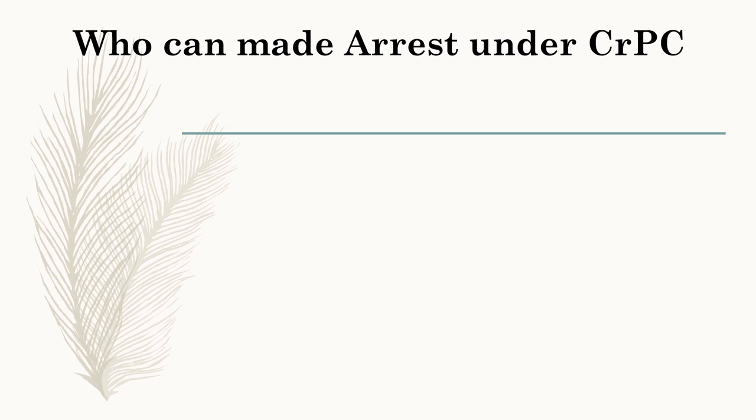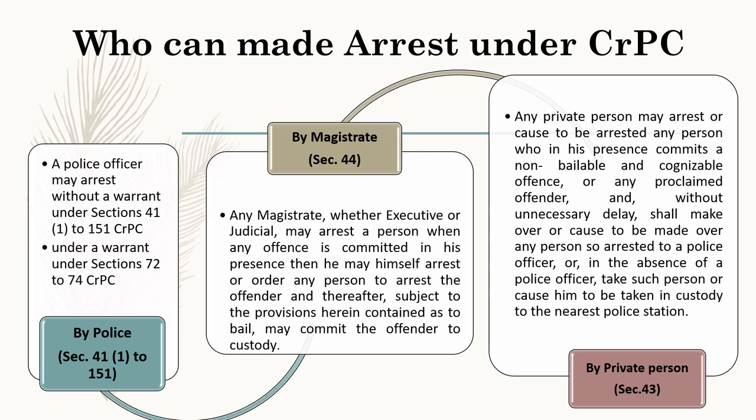Now the question is, who can make an arrest under CRPC? The arrest can be made either by police, by a magistrate, or by a private person. The police can make an arrest either without a warrant, which has been described under Section 41 to Section 151 of CRPC, or with a warrant, which is described under Section 72 to 74 of CRPC. Section 44 defines that arrest can be made by a magistrate. Any magistrate, whether executive or judicial, may arrest a person when any offense is committed in his presence, and he may himself arrest or order any person to arrest the offender, and thereafter depending upon the case he may even grant bail to that person or send him to custody.